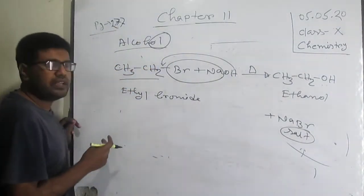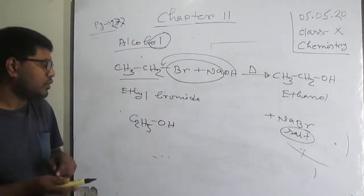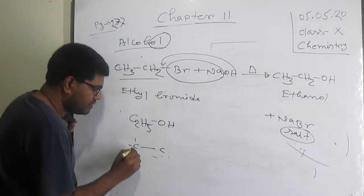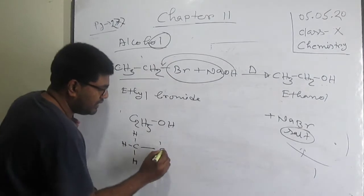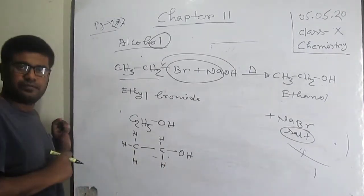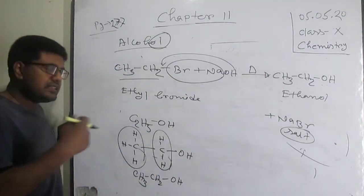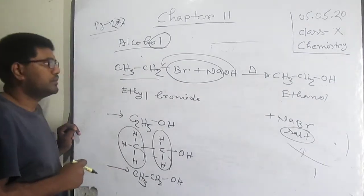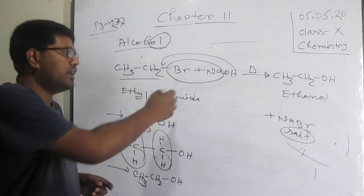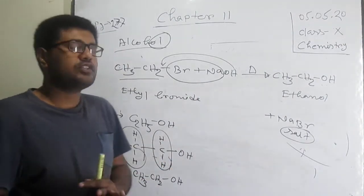The formula CH3CH2OH is the same as C2H5OH. If we draw two carbons: the first carbon has three hydrogens (CH3) and the second carbon has two hydrogens (CH2), then OH is attached. So ethanol can be expressed both ways. We can produce ethanol — an alcohol — from alkyl halide by applying caustic soda (sodium hydroxide) with some heat.